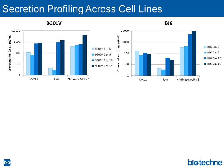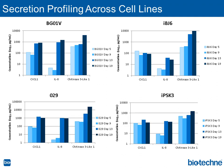The opposite is also true — we can profile analytes that increase through differentiation. Here again, chitinase-3-like-1 as we looked at with our array data, and we can also see CXCL1 and IL-8 cytokines increasing through differentiation. We can see similar profiles as we look at other cell lines as well.